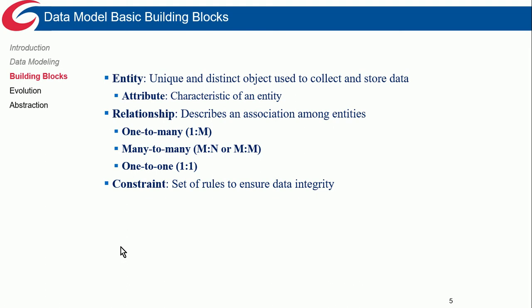The building blocks of data models start with entities — objects being tracked in our database. Entities have attributes, which describe or characterize them. For example, an invoice is an entity, and its attributes could include invoice number, date, and delivery information. All entities have relationships to one another: one-to-many, many-to-many, or one-to-one. Most relationships in the relational model are one-to-many, which will be the most common you'll see.